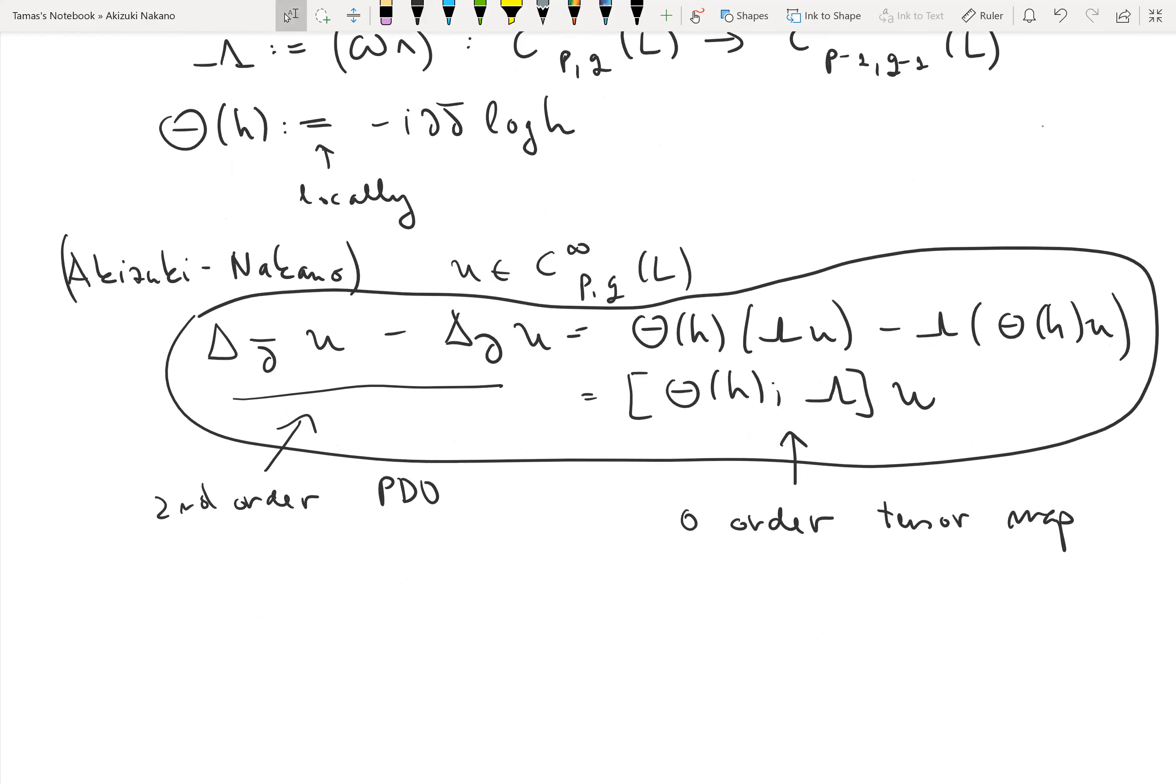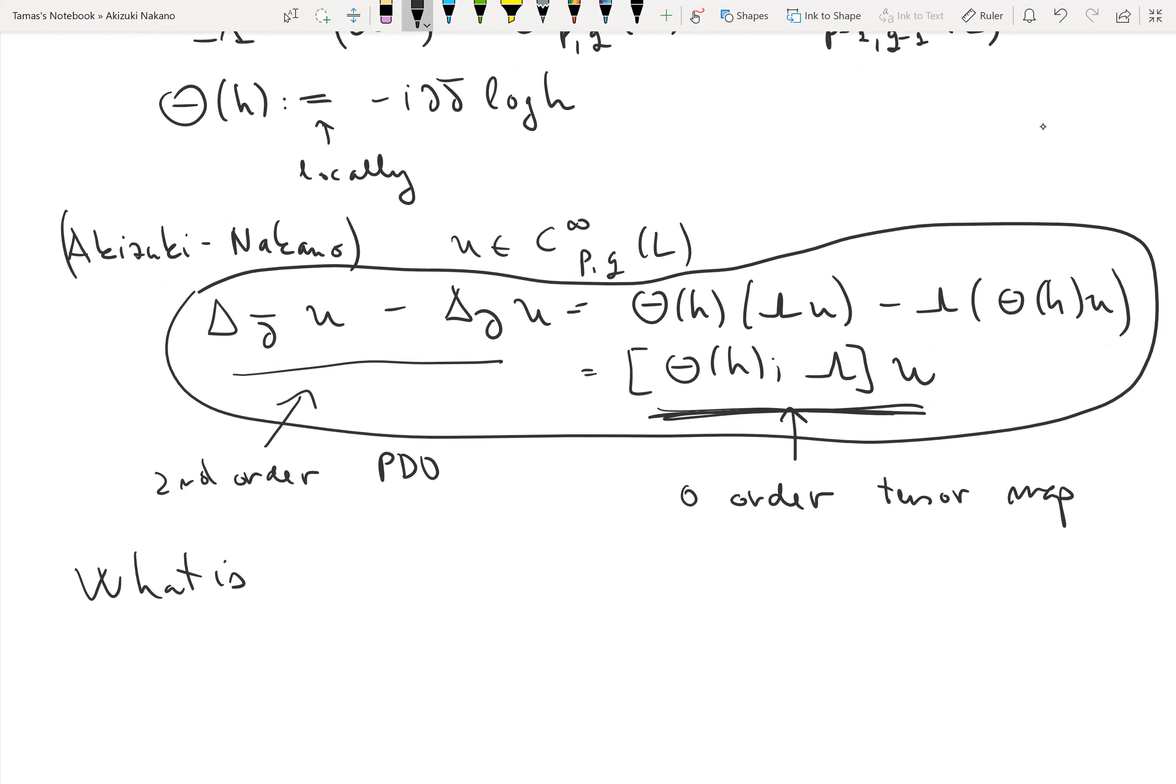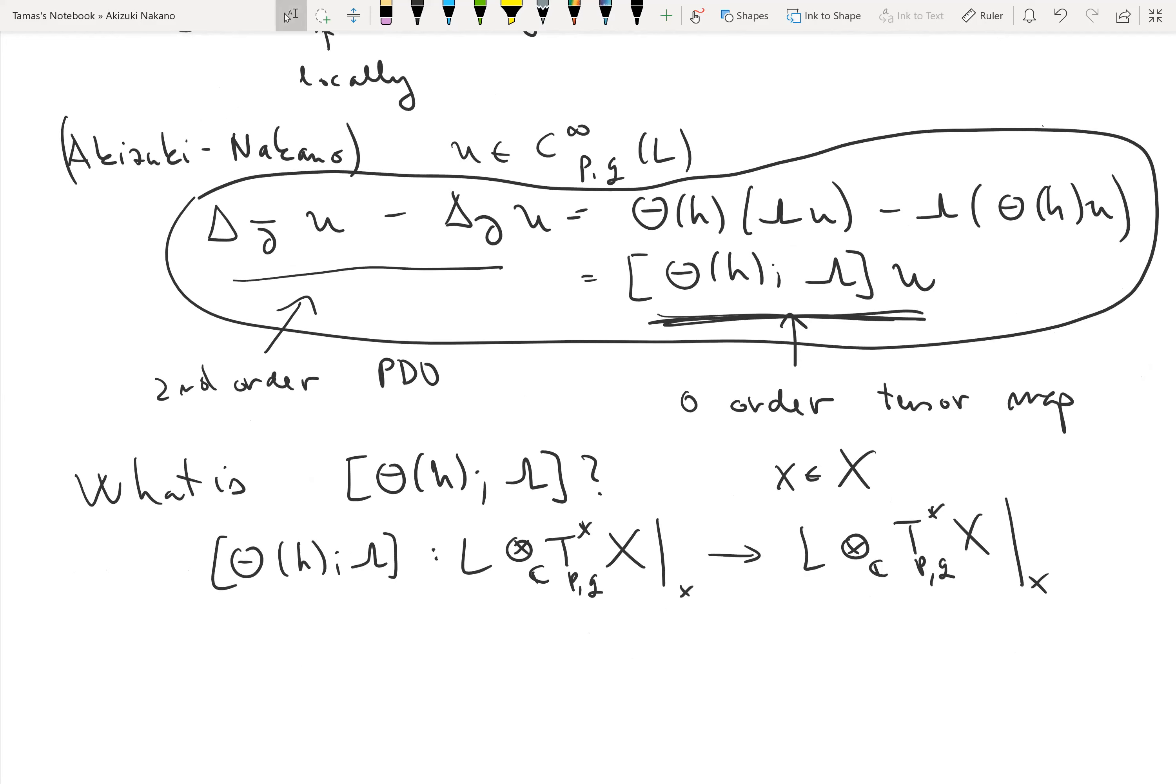It's a good question to understand what this expression is. What is the commutator between theta_h and lambda? Certainly it's a tensor map as I said, so in particular it's enough to understand it at a single point. Let's pick x in X, and we know this map will go from p,q forms at x.